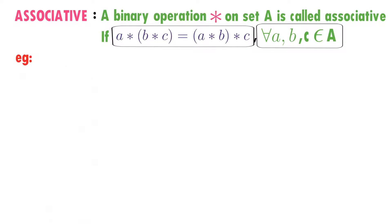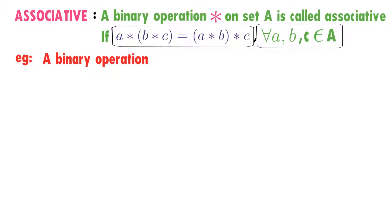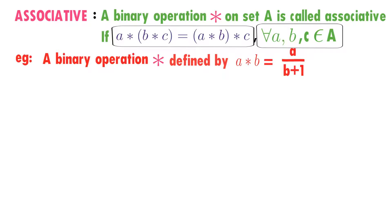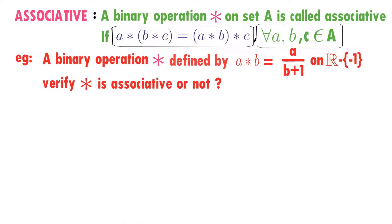These are the important things in associative property. A binary operation star defined by A★B equals A divided by (B+1) on the set of real numbers except minus 1. We need to verify whether star is associative or not.